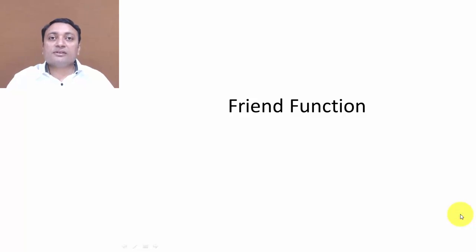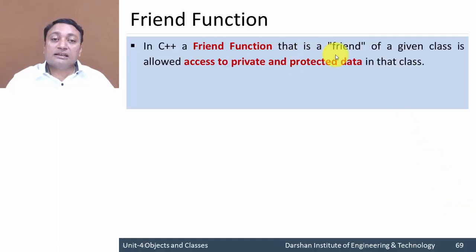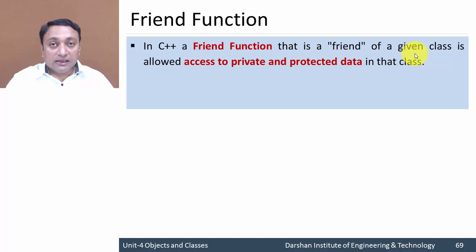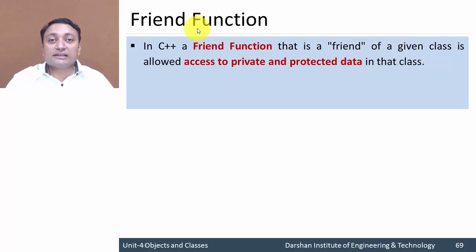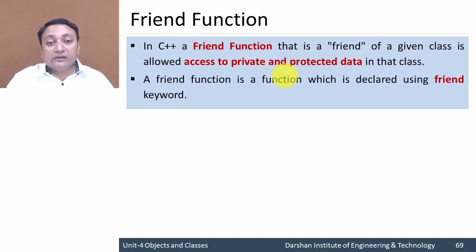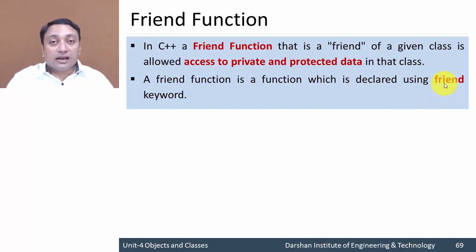In this lecture we are going to discuss friend function, a newly introduced concept in C++. A friend function is a friend of a given class which is allowed to access private and protected data members of that class. As we know, private data members are not accessible outside the class, but using a friend function we can access them. It is just like a regular function — you just need to prefix it with the friend keyword.